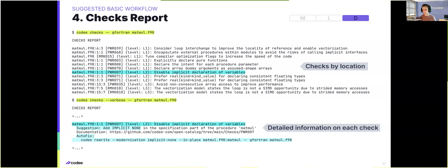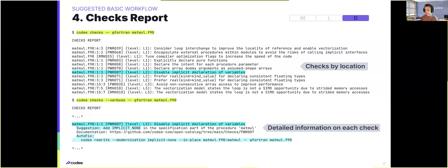Leaning more towards the developer side, we have the checks report as a complement to the screening report. While the screening identified which checks from the open catalog are applicable to the code, the checks report identifies the precise locations in the source code where all the different checks are applicable. On the top half of the slide, we can see the default output, which pinpoints for each improvement opportunity the particular source file as well as line and column numbers. Typically you will also use the verbose output, which expands each improvement opportunity to provide detailed information.